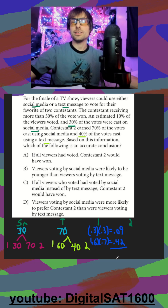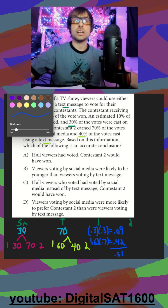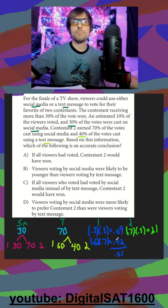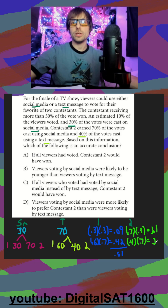So we can already see who the winner is — that's going to add up to 0.51. But just to make sure our math checks out, let's verify for contestant 2. Contestant 2 got 70% of the 30%, so 0.7 times 0.3, that's going to get us 21%. And then they got 40% of the 70% for text messages, so 40 times 70, that gets us 0.28, and that's the 0.49.